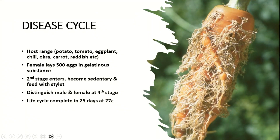If we talk about the disease cycle of these root-knot nematodes, they have a very wide host range. They can infect potato, tomato, eggplant, chili, okra, carrot, radish, and so on — around two to three thousand plant species are hosts of these nematodes.